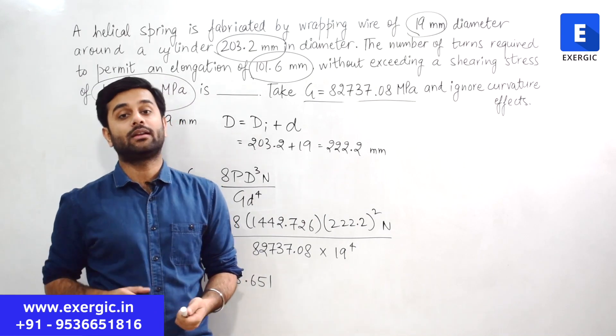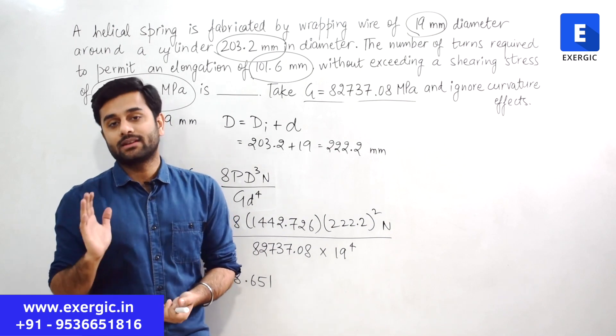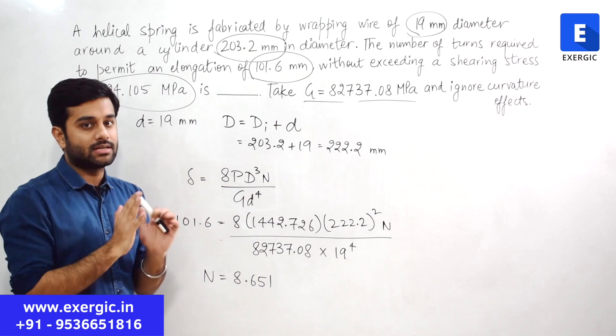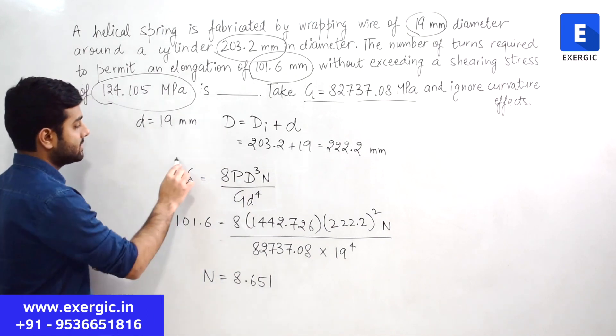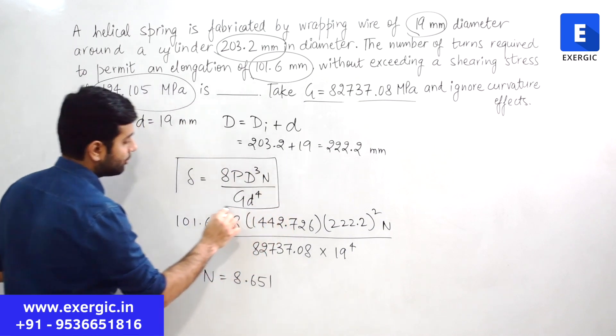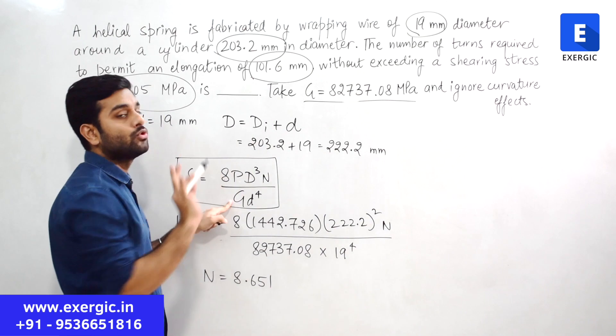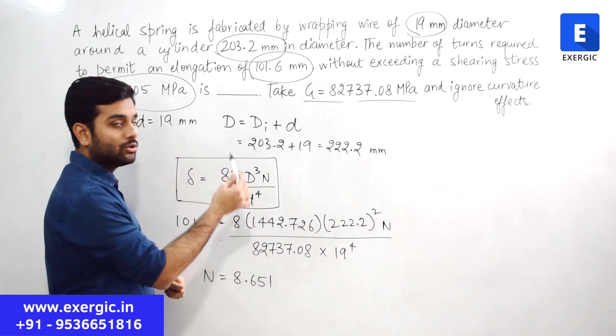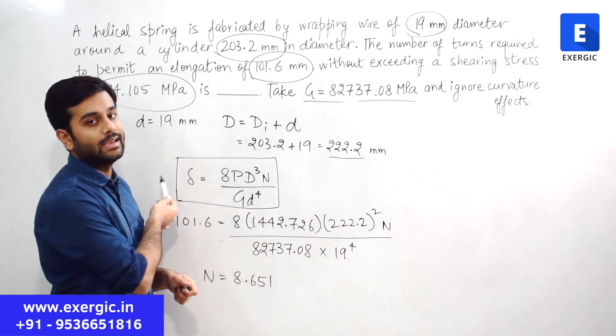In the deflection criteria, we already know the expression of deflection of the spring. I have written it down here. Del is equal to 8PD cubed N divided by d to the power 4 G. G value is also known to us. P value we calculated. Capital D is 222.2. Small d is 19 mm.